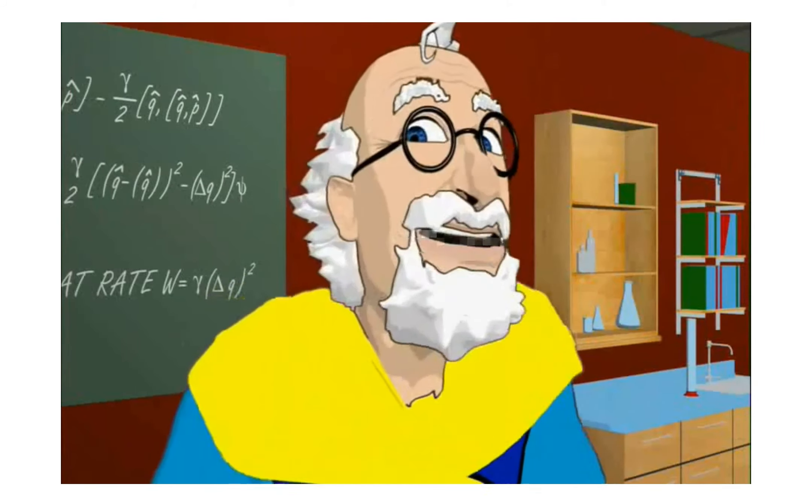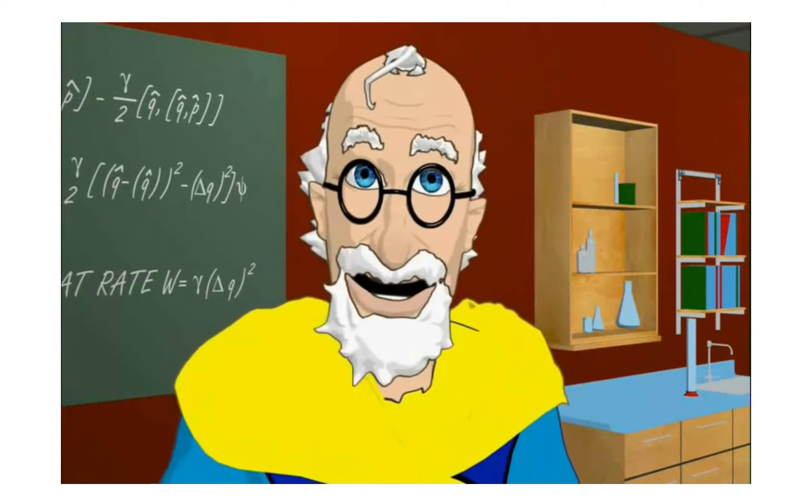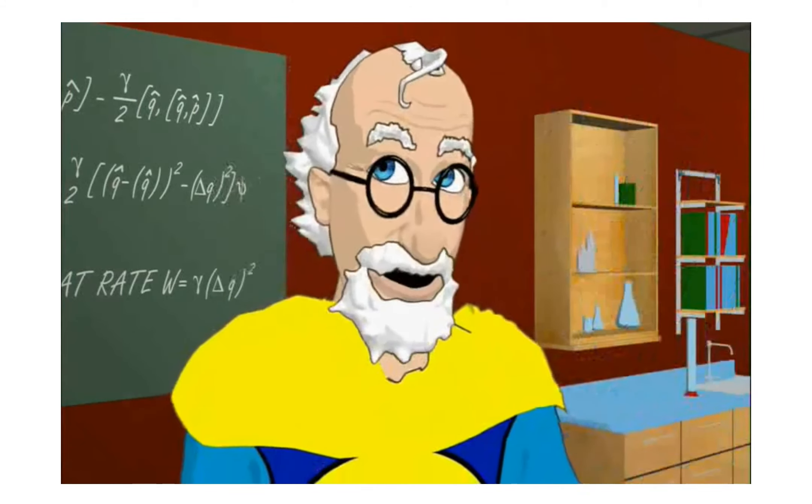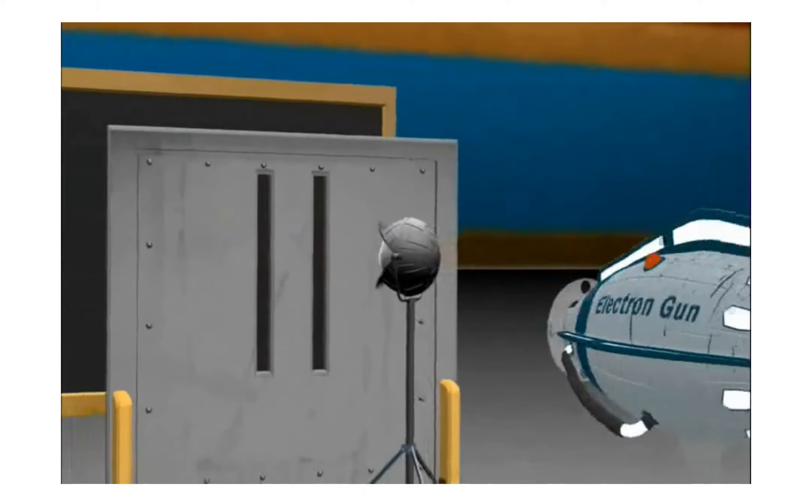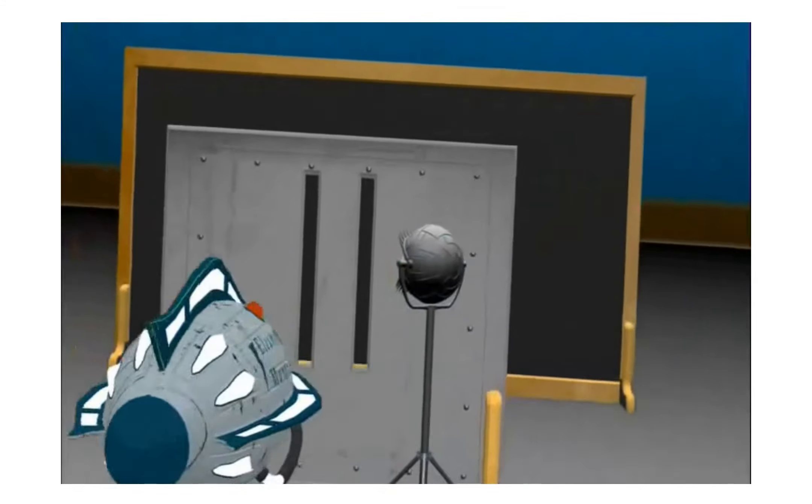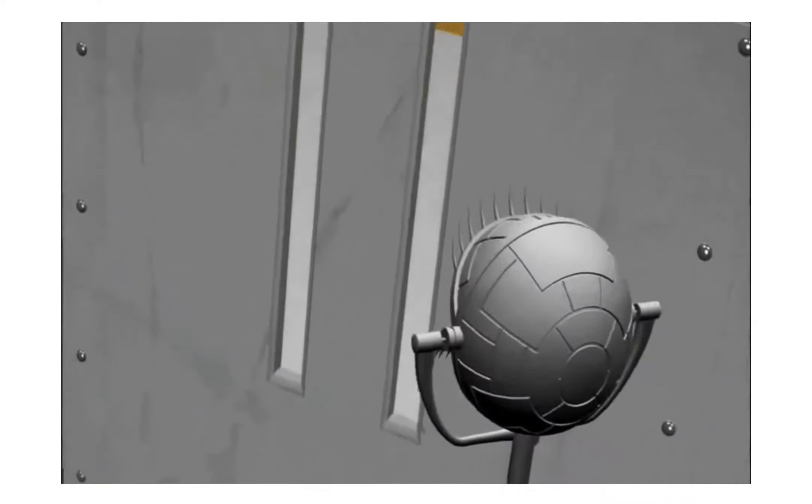But, physicists were completely baffled by this. So, they decided to peek, and see which slit it actually goes through. They put a measuring device by one slit, to see which one it went through, and let it fly.